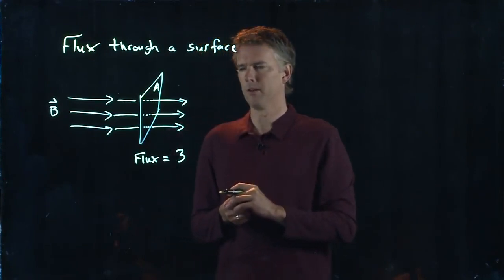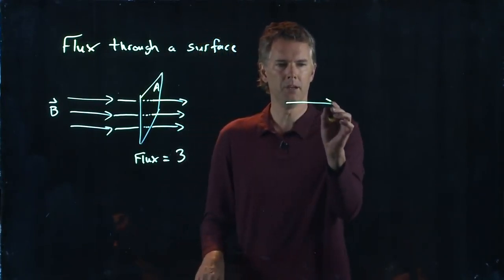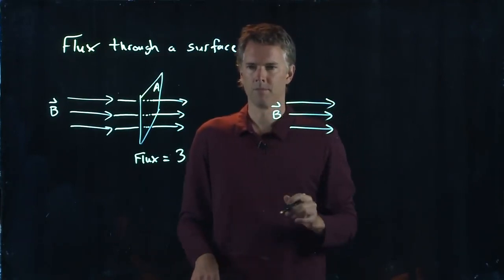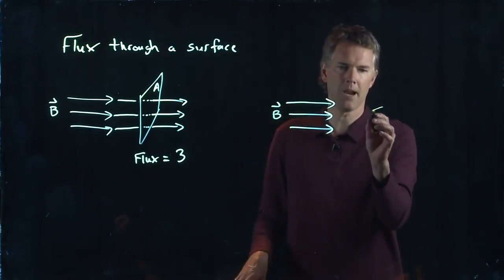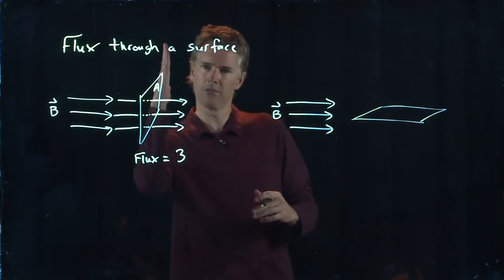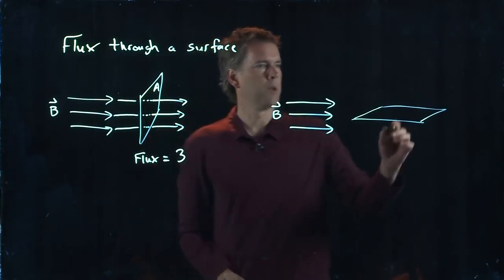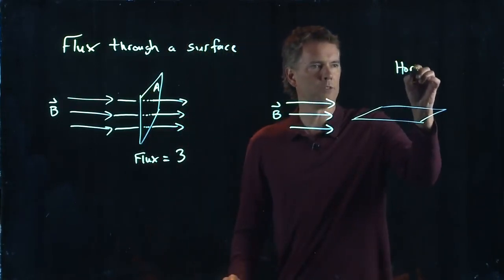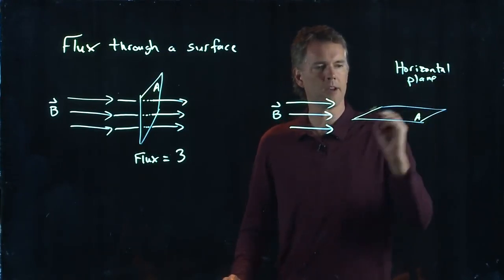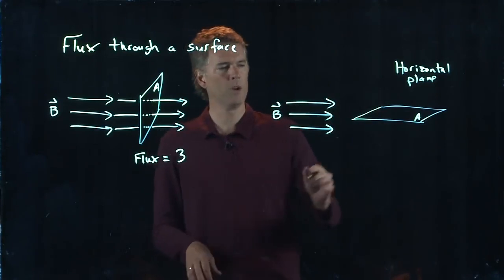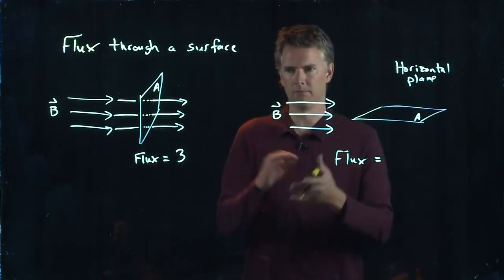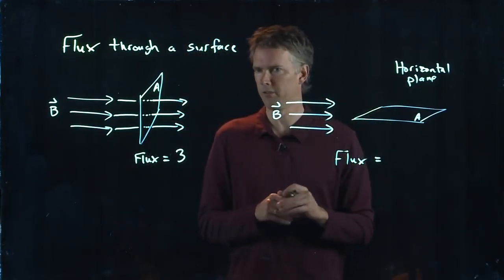But now let's do the following. Let's say we're going to take our lines of B, still pointing to the right, but we are going to tip the area sideways. So this is supposed to represent a vertical plane, but now it is a horizontal plane. And it's still area A. What is the flux in this case? What do you guys think? What's the flux through the surface?